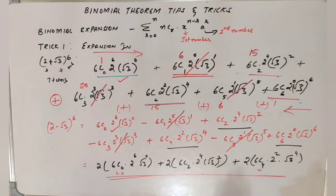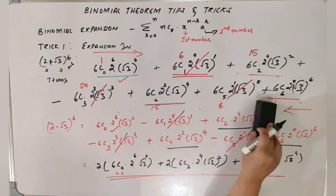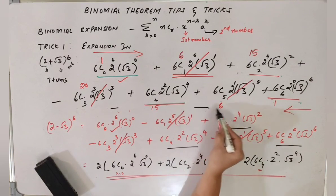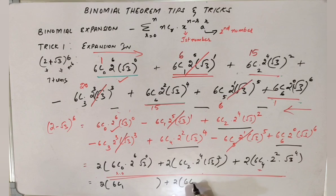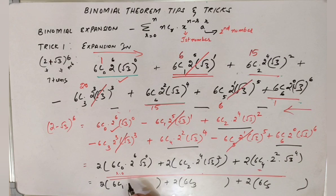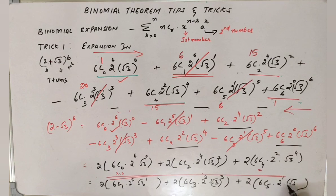To summarize: if we have subtraction of two binomial expressions, the odd-numbered NCRs are going to get retained. For subtraction, the result is 2 times of 6C1 into 2^5 into (root 3)^1, plus 6C3 into 2^3 into (root 3)^3, plus 6C5 into 2^1 into (root 3)^5.